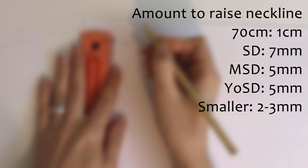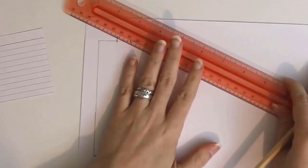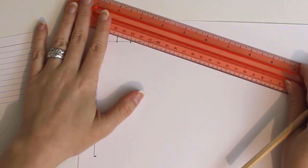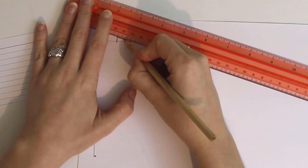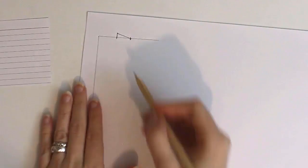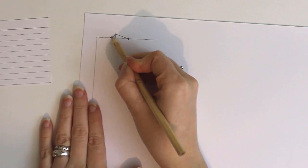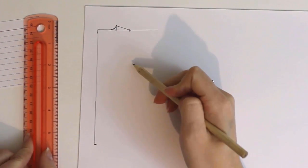For mini and USD sized dolls, I've found half a centimeter works well. For SD, 7 millimeters works well, and for 70 centimeter dolls, I use 1 centimeter. For anything smaller than USD, it only needs to be 2 or 3 millimeters. Once you've raised the neckline according to your doll's size, connect this new line with the shoulder width mark to create the shoulder slope. Then round the neckline. You can freehand it or use a French curve if you have one.